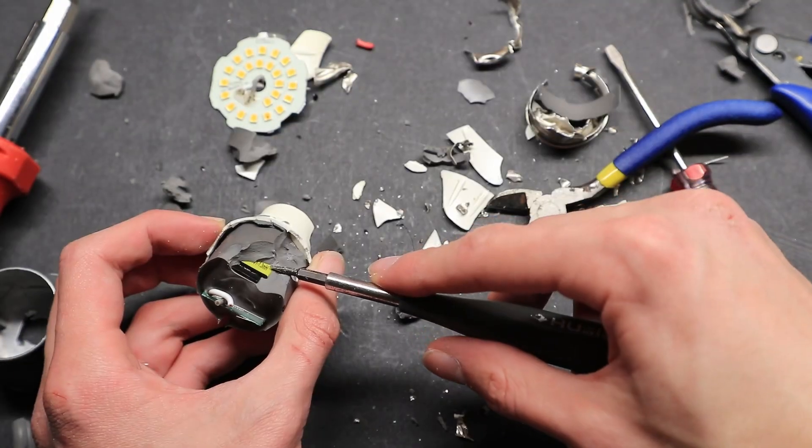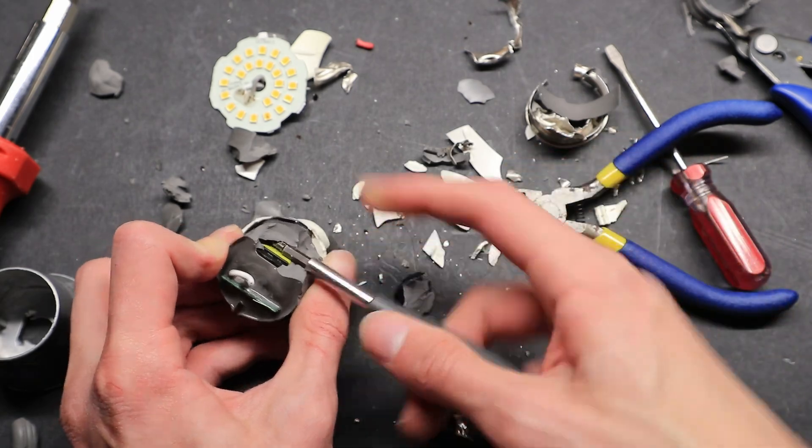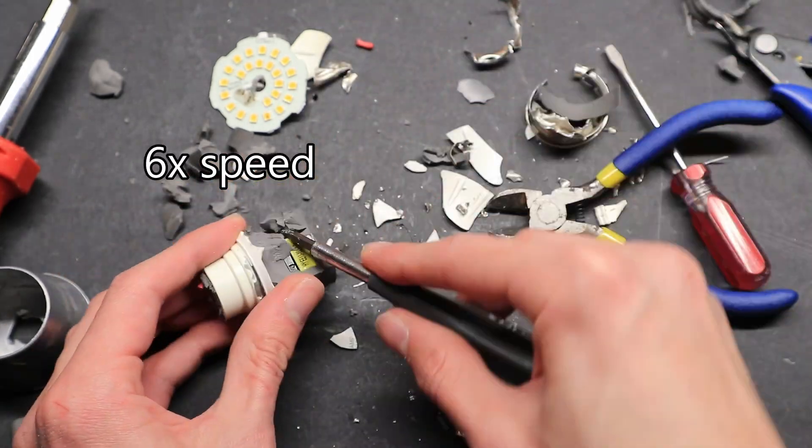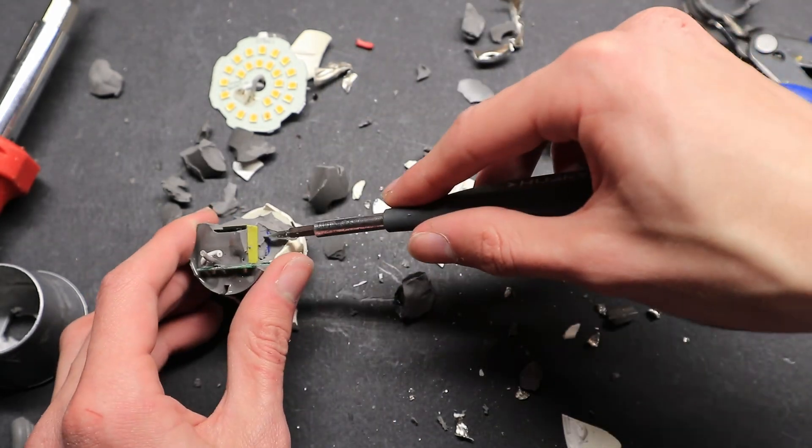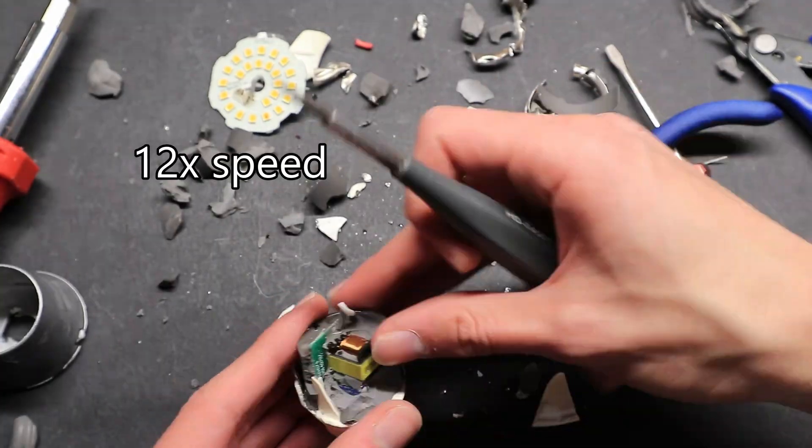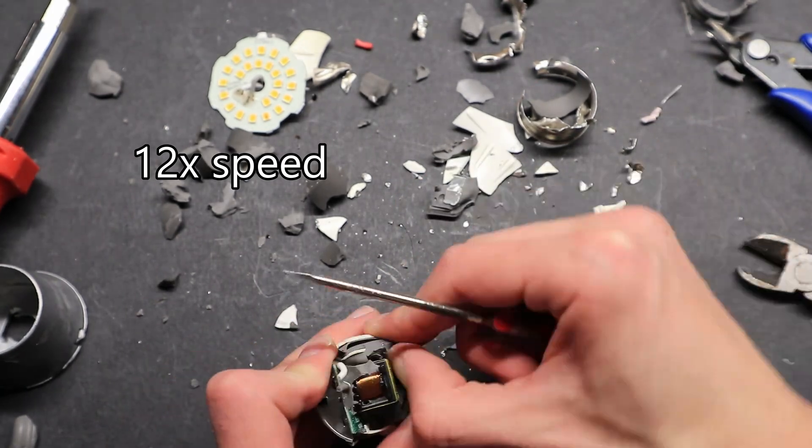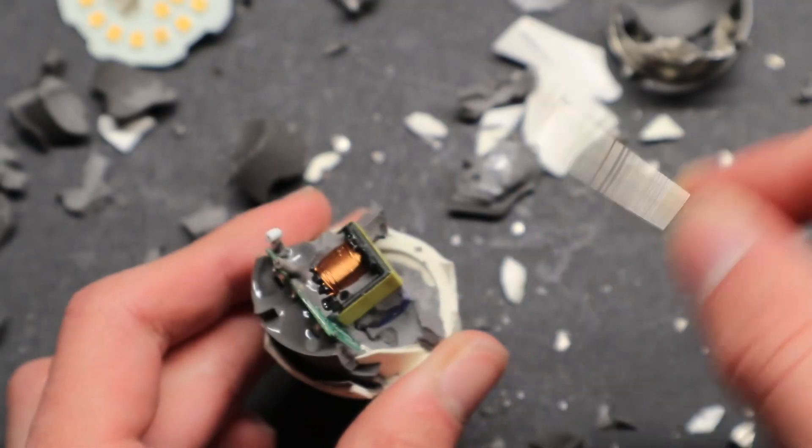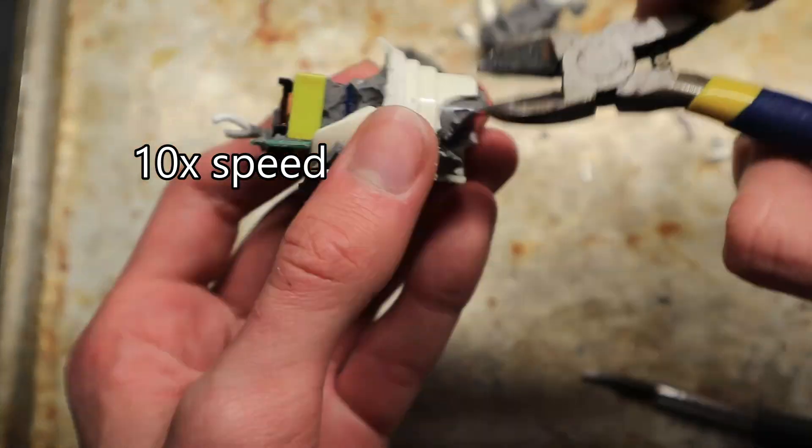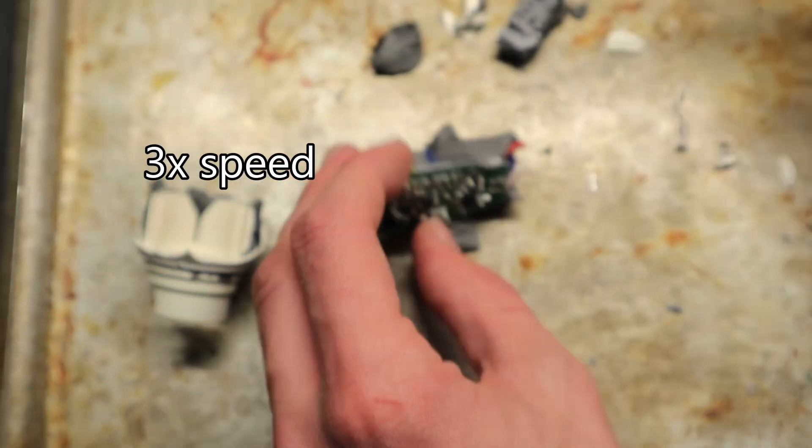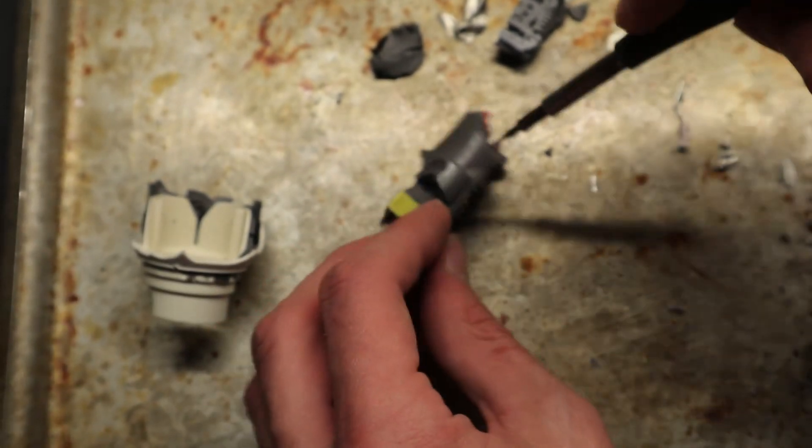I see something, a transformer or whatever that is. Another one of the capacitors. Thankfully, this epoxy can be removed easily.